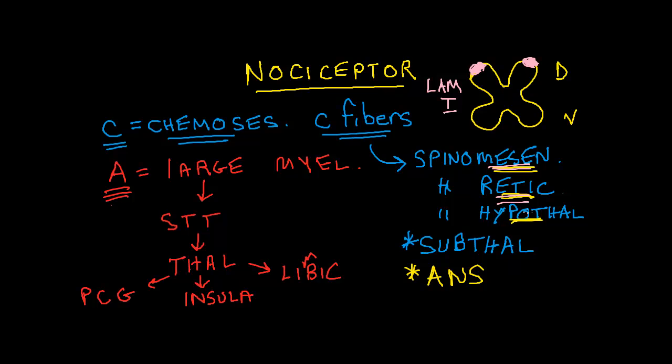So the key point of this video is that when we talk about nociception, most nociception does not result in pain. Most nociception travels into autonomic nervous system centers. When we talk about nociception and pain, we're talking predominantly about the less numerous large myelinated A fibers.